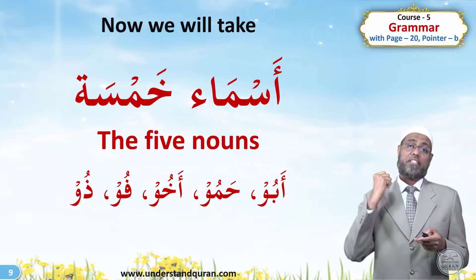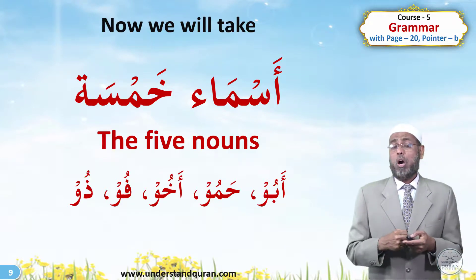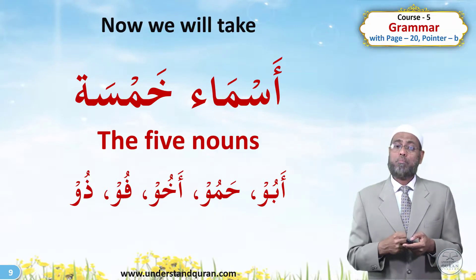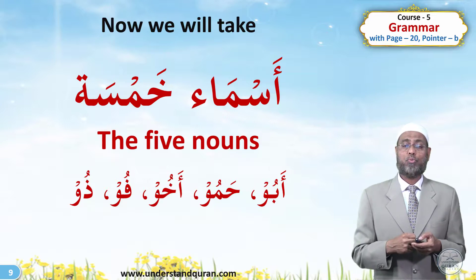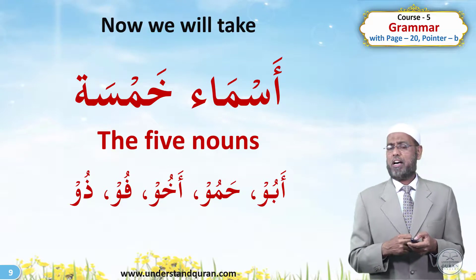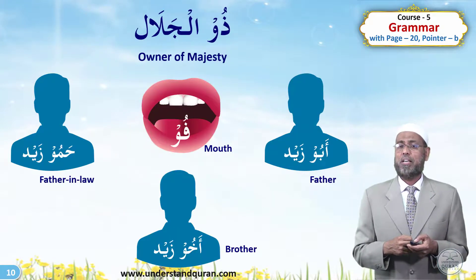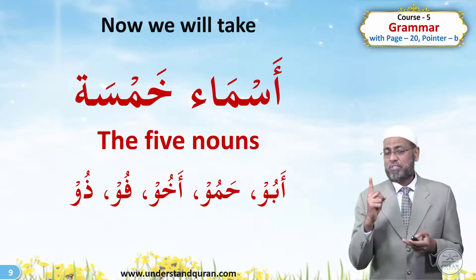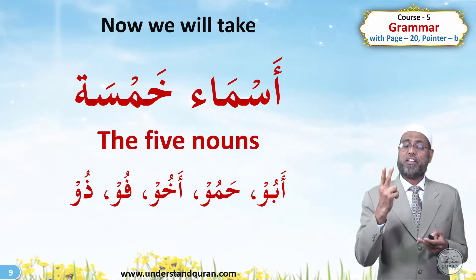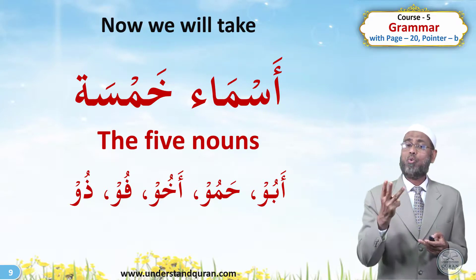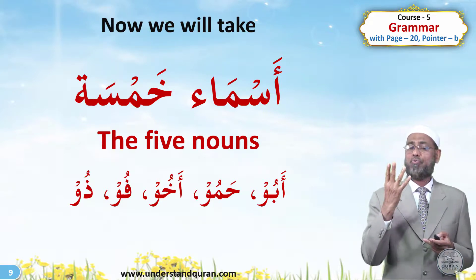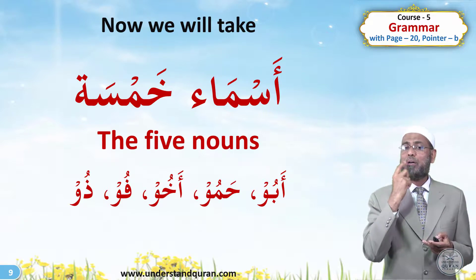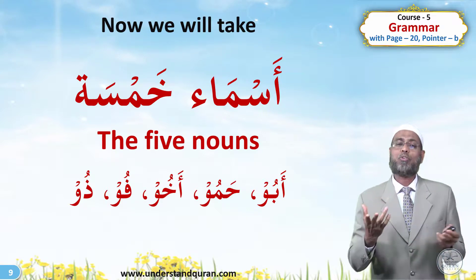Now we will take five nouns — that's very interesting. They have no direct relation with the five verbs, but remember the sets and don't confuse between the two; that's why we revised the five verbs. What are the five nouns? They are Abu, Hamu, Akhu, Fu, and Thu. Abu is father, Hamu is father-in-law, Akhu is brother, Fu is mouth, and Thu is owner.